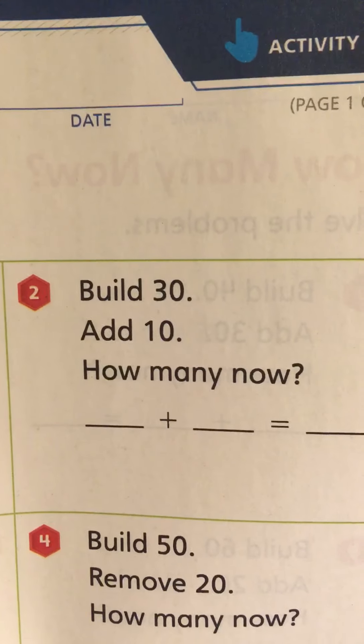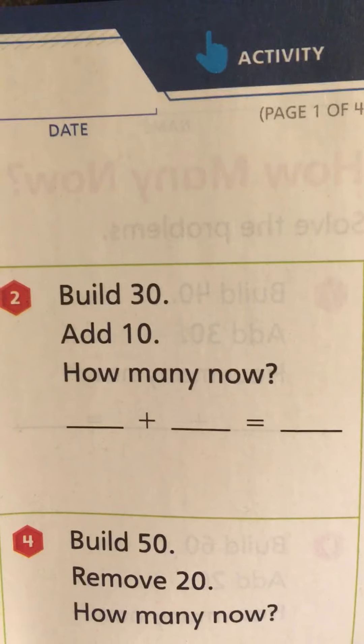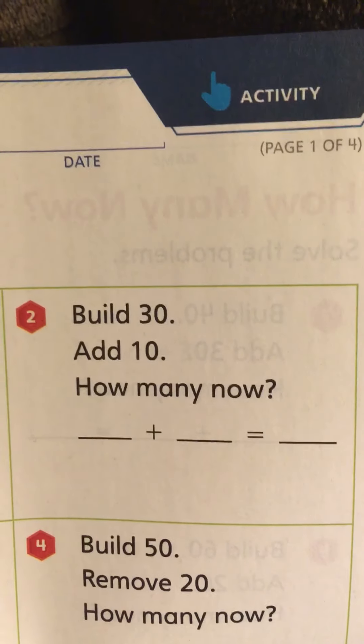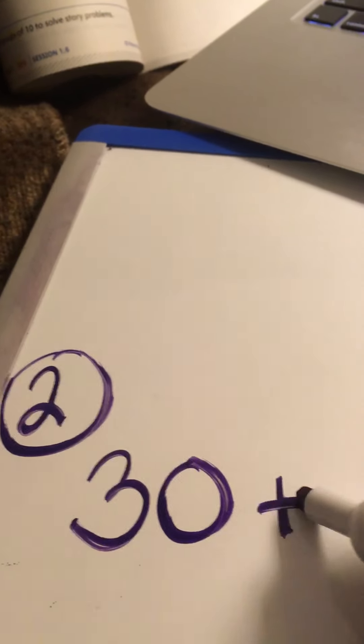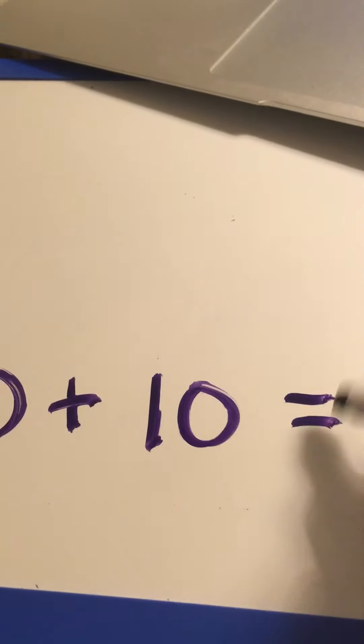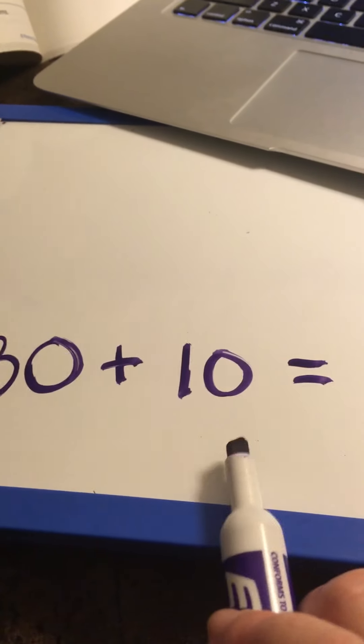Okay good job! So that was number one. You can number on your paper — I'm going to erase mine because I'm on a whiteboard, but make sure you put number one before your problem. Now write number two on your paper. Let's look at number two — read it together with me: Build 30, add 10. How many now? So I'm starting with 30 and I'm adding 10. Let's make our equation: 30 plus 10 equals.